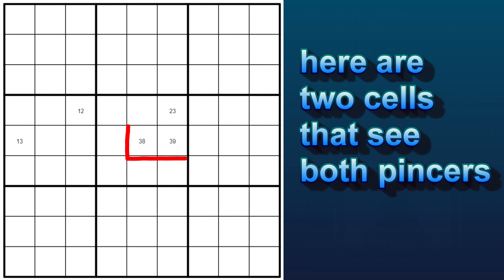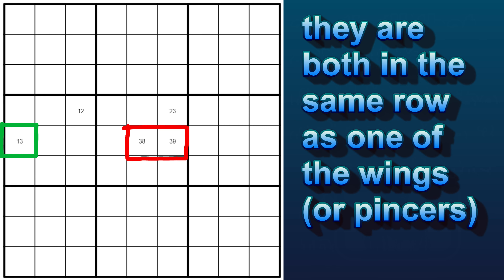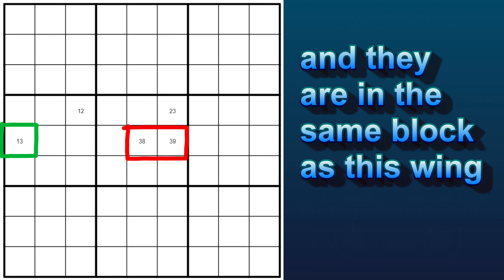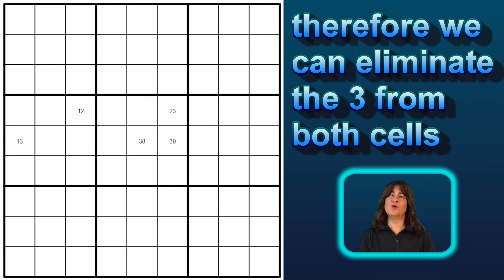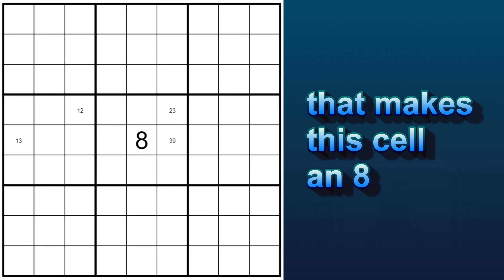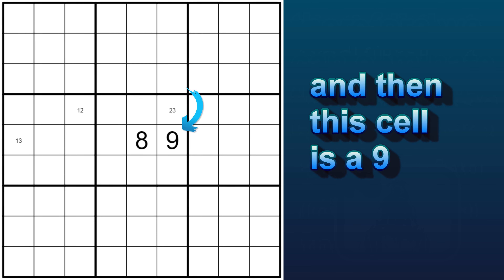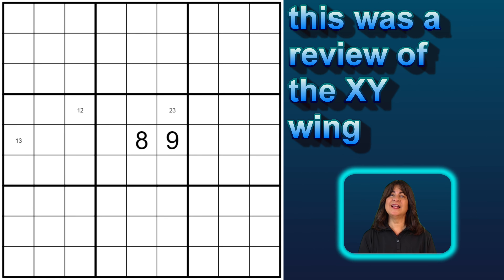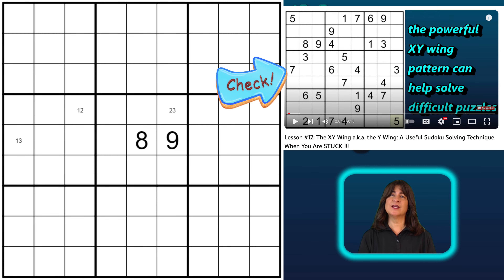Here we have two cells that see both pincers. They are both in the same row as this cell, and they are in the same block as this cell. So we can eliminate the three from both these cells, and then this cell becomes an eight, and this cell is a nine. So that's a recap on the XY wing — please check out my full tutorial on it.